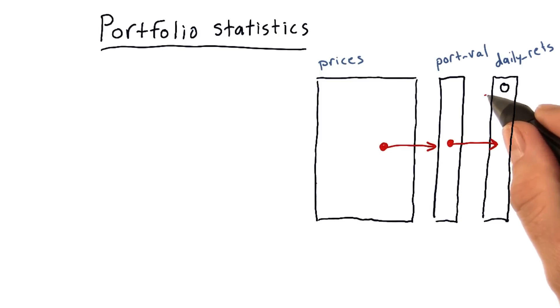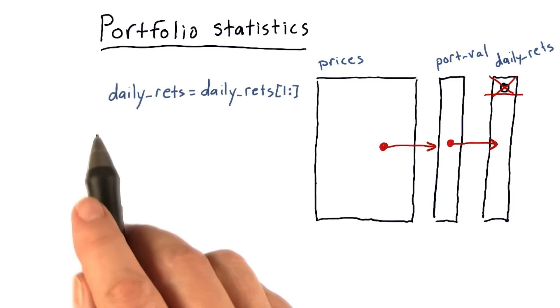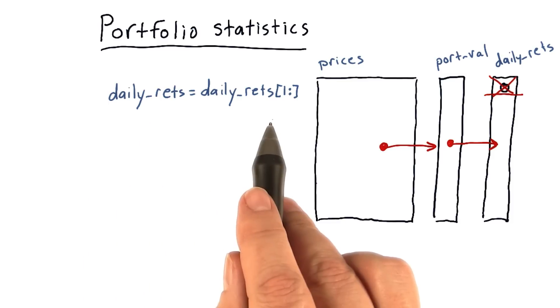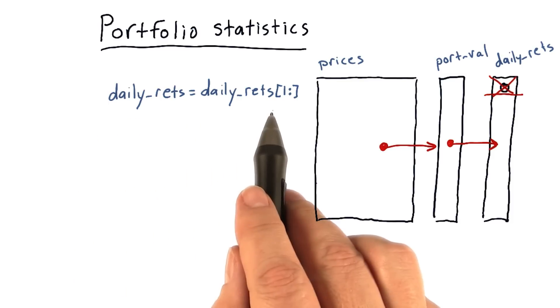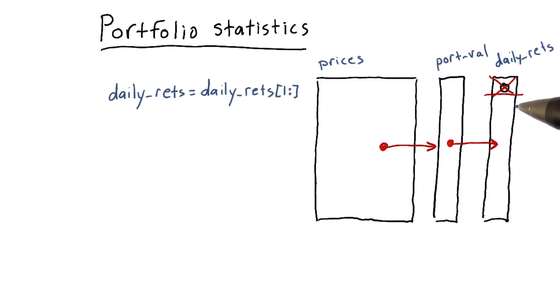So we want to exclude that value from any calculations we do across all daily returns. It's easy to accomplish this with a simple Python statement, which is just to replace daily returns with daily returns where we just include the second row forward. And boom, we're rid of that first zero.